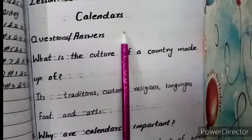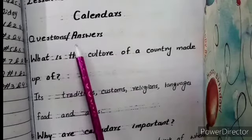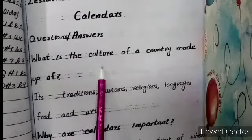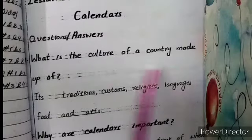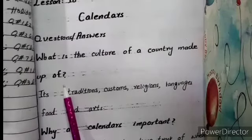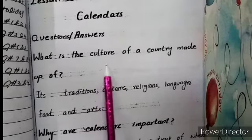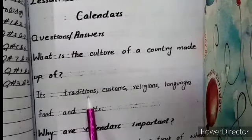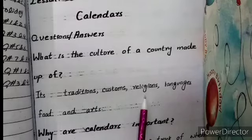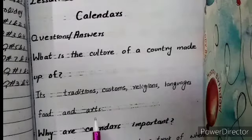Chapter number 10 is Calendars. The first question is: what is the culture of a country made up of? The culture of a country is made up of its traditions, customs, religions, languages, food, and art.